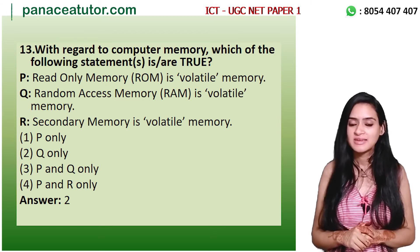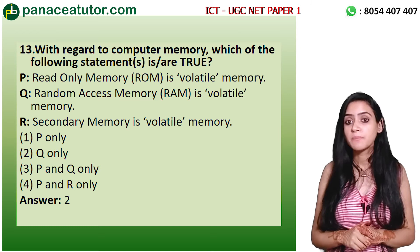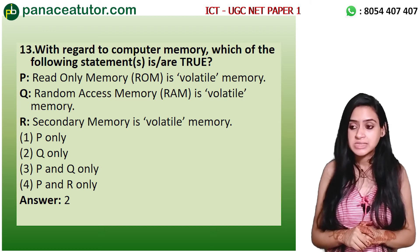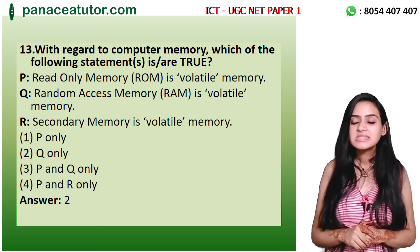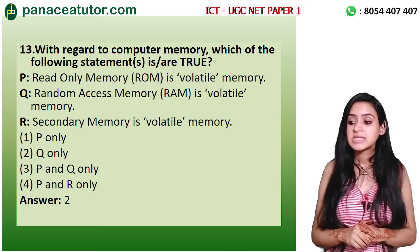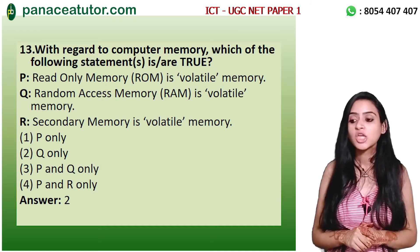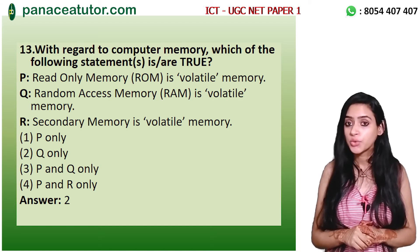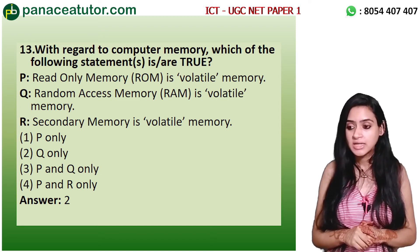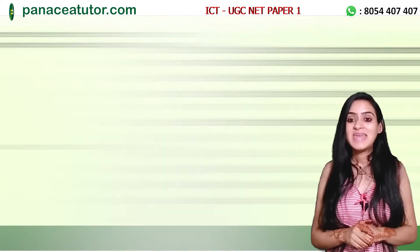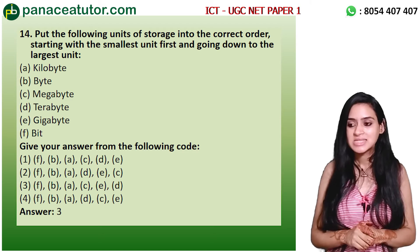The next question is also related to computer memory. With regard to computer memory, which of the following statements are true? Statement P: Read Only Memory is volatile memory. Statement Q: Random Access Memory is volatile memory. Statement R: Secondary memory is volatile memory. Options: P only, Q only, P and Q only, P and R only. The correct answer is Option 2 — Q only. Random Access Memory is volatile memory.